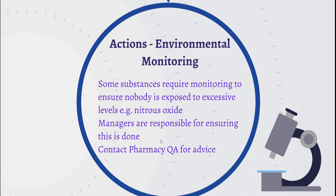Some substances may need to have their levels in the environment monitored. Such substances usually have a workplace exposure limit, which is defined in the EH40 document mentioned earlier. If you are working with one of these substances, the first thing to do is to work out if you are likely to be using enough of the substance for it to be anywhere near that limit. If you calculate how much you use in a session and compare it to the published limits in EH40, this should give you some idea. There are very few substances used in the Trust which are near this limit — one of those is nitrous oxide, and for this reason areas of maternity and some theatres are routinely monitored to ensure that staff aren't exposed to too much during their work. If you think your area should be monitored and you aren't sure if you're on the schedule, or if you think you're using another substance with a workplace exposure limit and have calculated that you may use enough to be near that limit, contact Pharmacy QA for further advice.